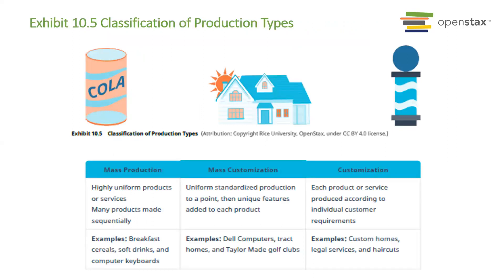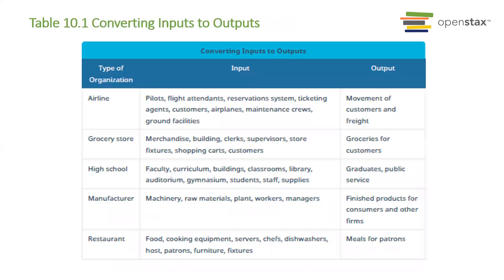This exhibit gives you a good classification of product types into mass production versus mass customization versus customization. Take a look at these definitions and examples. And then this is a good chart related to converting the inputs into outputs — basically, the inputs are the raw materials and the human labor that goes into producing an output of either a product or service.